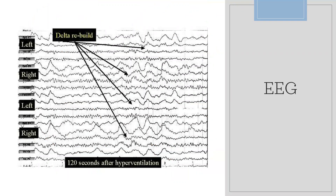The EEG can also help diagnose MMD. There is a pathognomonic sign in pediatric patients that appears after the hyperventilation test. A patient without a known diagnosis of MMD who undergoes EEG will have a hyperventilation test, and one to two minutes after hyperventilation, they will reveal a delta wave rhythm — generalized, as you can see here. This is called 'Delta Rebuild' and is pathognomonic of MMD in pediatric patients.